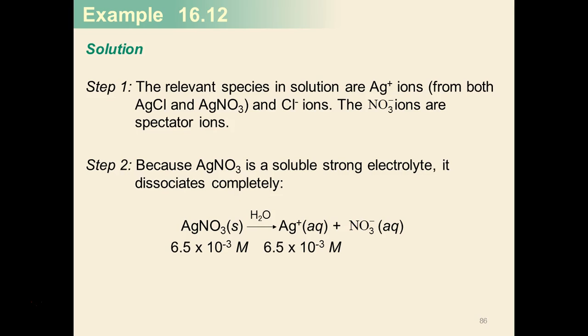Now, silver nitrate is a very strong electrolyte and it completely dissociates. So all of that concentration of the silver nitrate is going to turn into an extra source of silver ions. Because it's a strong electrolyte, we don't have to worry about any equilibrium with the silver nitrate.